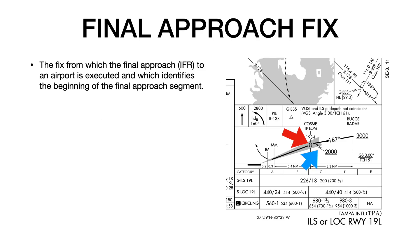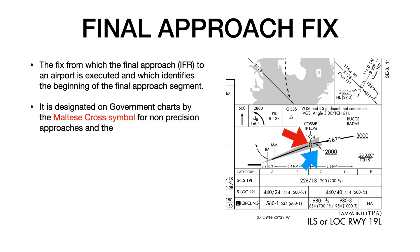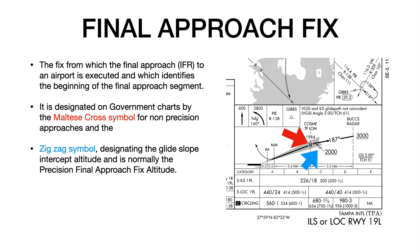Let's look at some of the definitions, and this will help us when we look at some of the other examples in this pilot interview course section. The Final Approach Fix is the fix from which the final approach to an airport is executed, and which identifies the beginning of the final approach segment. It's designated on the government charts by the Maltese cross for non-precision approaches, and the zigzag line — sometimes we call it the lightning bolt — designating the glide slope intercept altitude is normally the precision Final Approach Fix altitude.